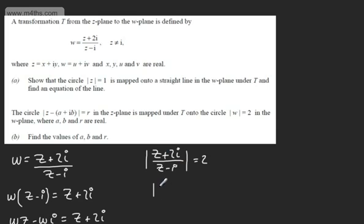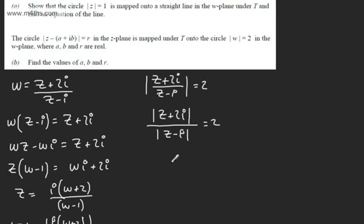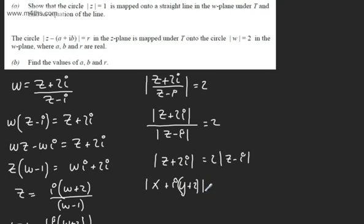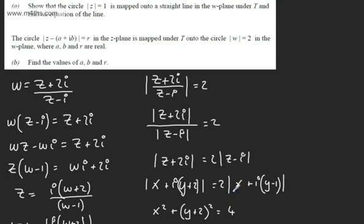We can split the modulus up and write mod(z plus 2i) divided by mod(z minus i) equals 2. Multiplying both sides by mod(z minus i), we get mod(z plus 2i) equals 2 times mod(z minus i). Rewriting in Cartesian form: the modulus of (x plus i(y plus 2)) equals 2 times the modulus of (x plus i(y minus 1)). Squaring both sides to remove the moduli gives x squared plus (y plus 2) squared equals 4 times (x squared plus (y minus 1) squared).